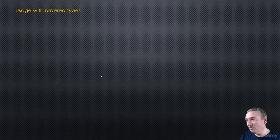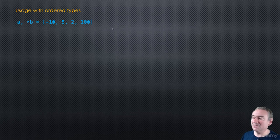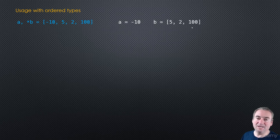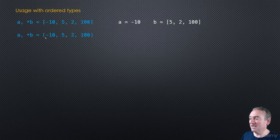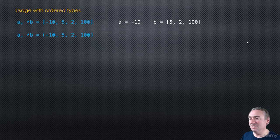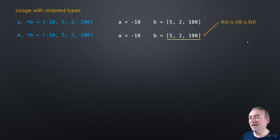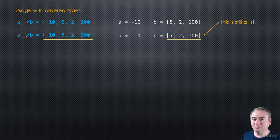Let's take a look at usage with ordered types first. If we write A, *B = [-10, 5, 2, 100], we end up with -10 in A and B is a list containing the remaining elements. We can also unpack a tuple — the same thing happens: -10 goes into A and 5, 2, 100 go into B. Notice that B is still a list — we always unpack the remainder into a list, even if we started with a tuple.